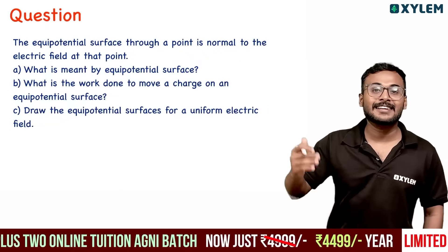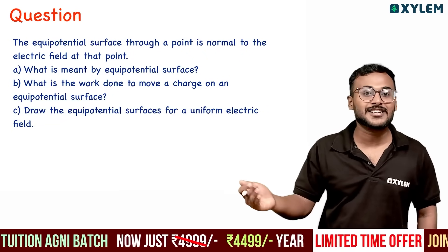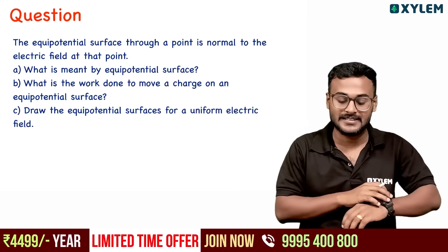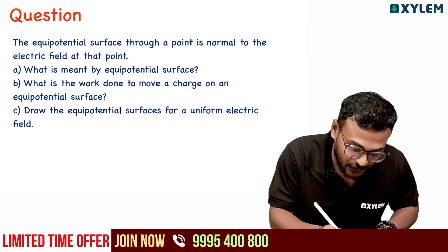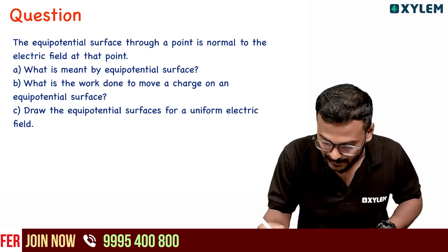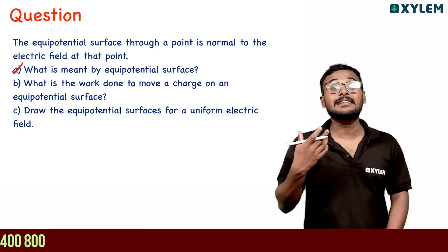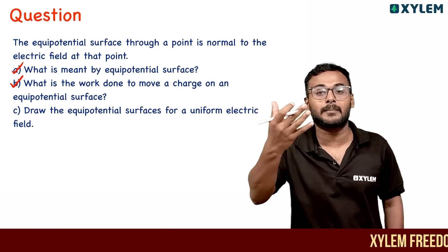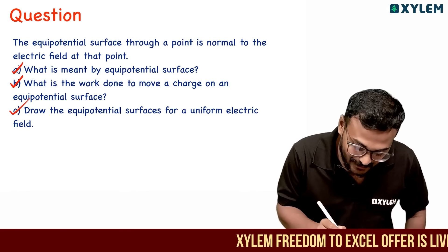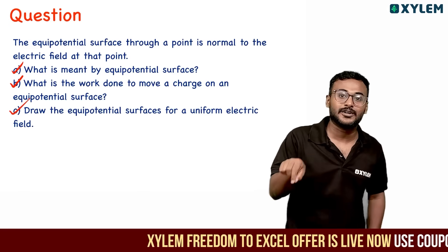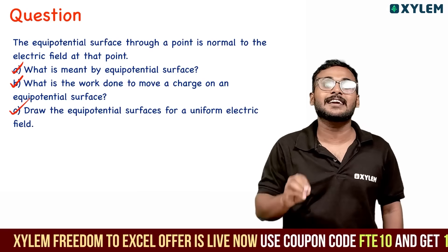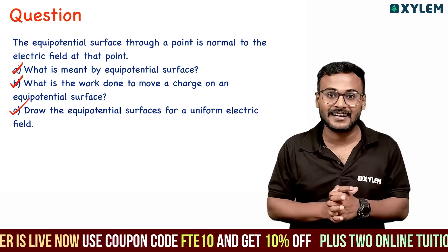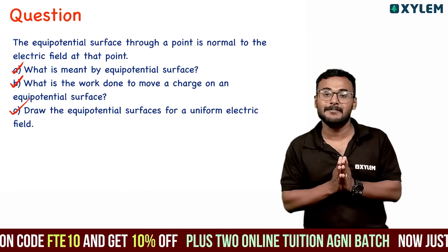The next chapter is Electric Potential and Capacitance — it's a big chapter. Equipotential surface is a huge topic. The uniform electric field relates to a huge potential surface. You have to note the difference between the important parts.